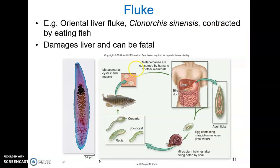Another example is the oriental liver fluke, which is contracted by eating fish. This causes liver damage such as cirrhosis.